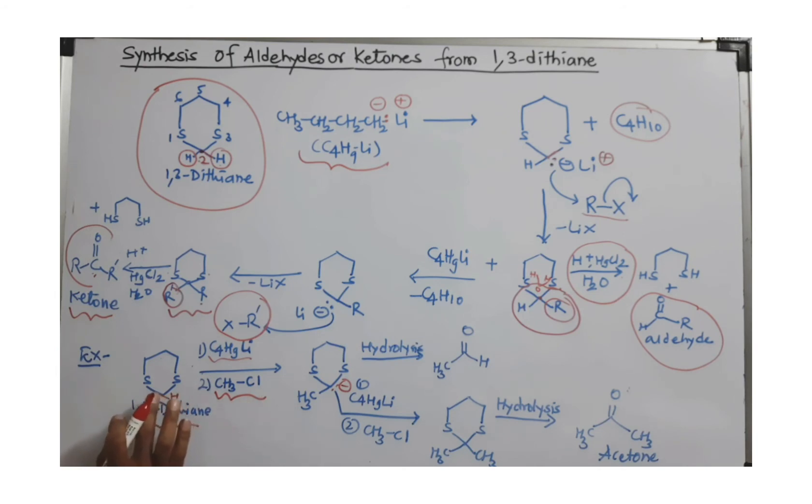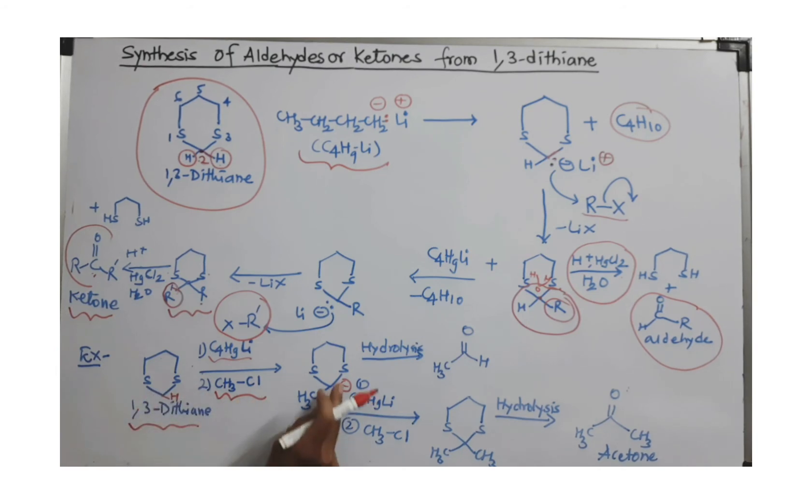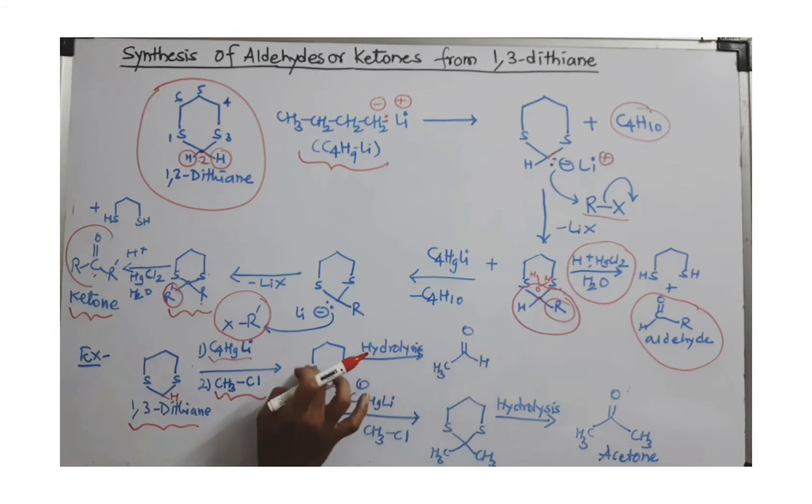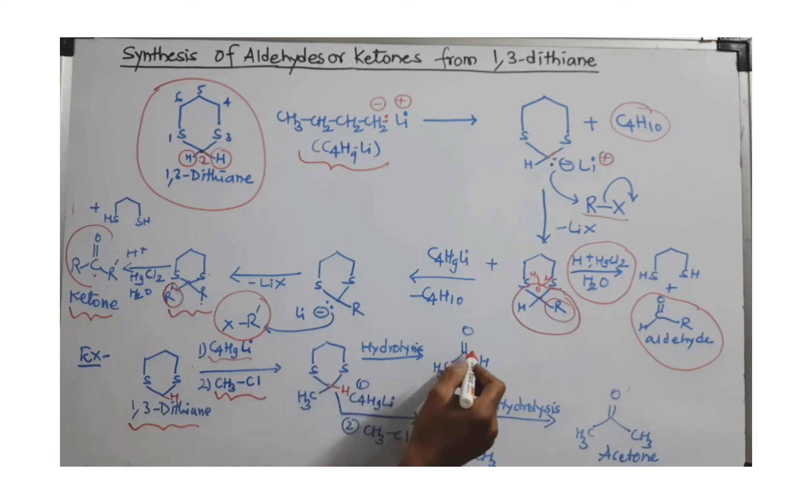Then one methyl group is attached. Then do the hydrolysis part. One hydrogen is still there. Do the same thing: removing the two sulfurs, joining two hydrogens from water, and one oxygen to carbon number 2 with the help of a double bond to get aldehyde.